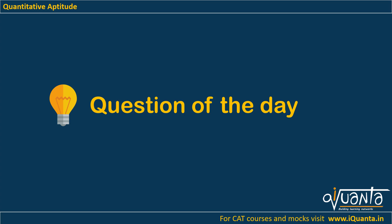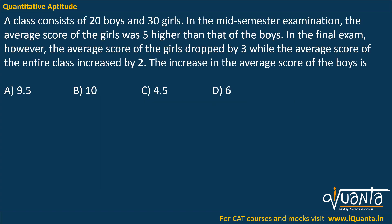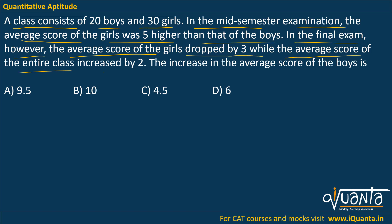Hello everyone. Today we will solve a past CAT question on averages. The question is: a class consists of 20 boys and 30 girls. In the mid-semester examination, the average score of the girls was 5 higher than that of the boys. In the final exam, the average score of the girls dropped by 3 while the average score of the entire class increased by 2. The increase in the average score of boys is?